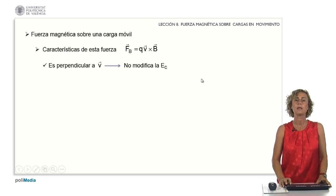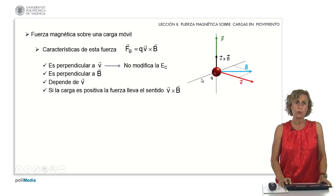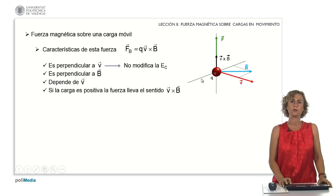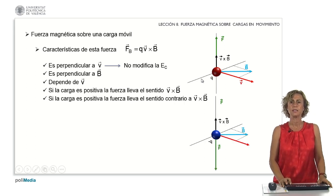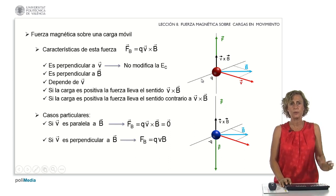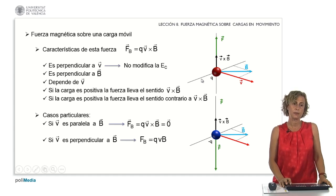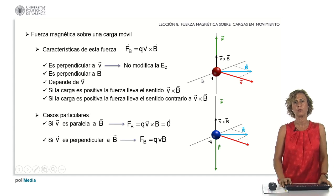Consequently, this force does not alter the particle's kinetic energy. It consistently remains perpendicular to v and naturally depends on the particle's velocity. For a positive charge, the force aligns with the sense of v cross B, while for a negative charge, it takes the opposite sense. If v is parallel to B, the force will be zero. Conversely, if v is perpendicular to B, the force's magnitude reaches its maximum value, as the sine of 90 degrees equals 1.